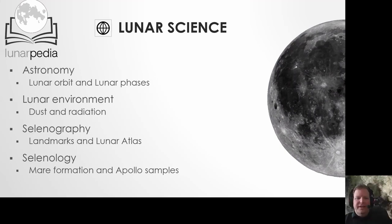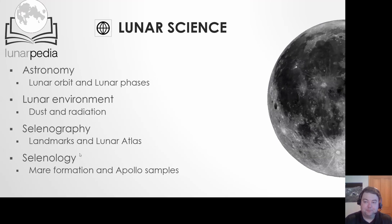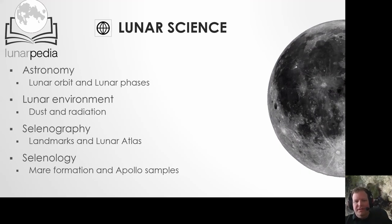Ben unofficially adopted the lunar science category and took a deeper look at the structure of how we're thinking about putting together Lunarpedia. Right now we've got four subcategories, and we're hoping most content will fall in them, but we could add more as we find things that don't fit. We've got astronomy, which will cover everything we know about lunar orbit, lunar phases, and similar topics. Then the lunar environment covers dust, radiation, and all the stuff we'd encounter on the surface and in space around the Moon.